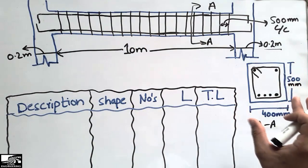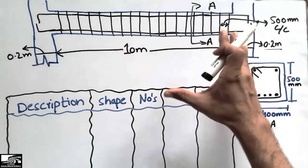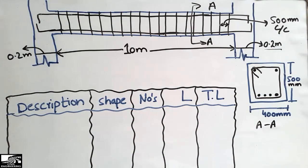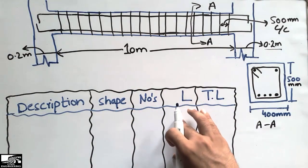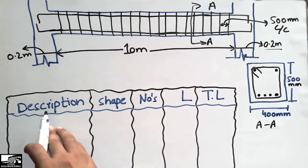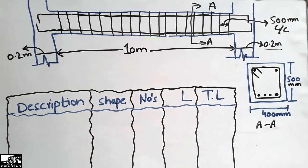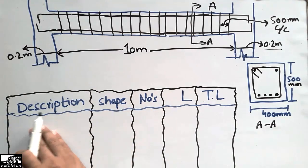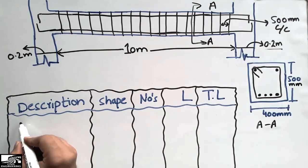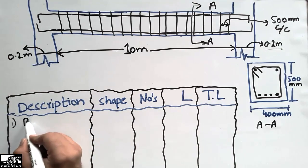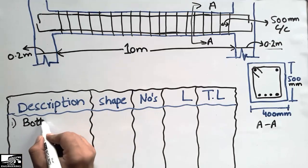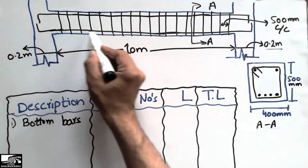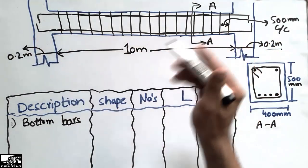These are the known dimensions and terms. We are now going to find how to make the bar bending schedule of the beam. In the bar bending schedule, the first column is the description — what type of bars are used. The first entry is the bottom bars.